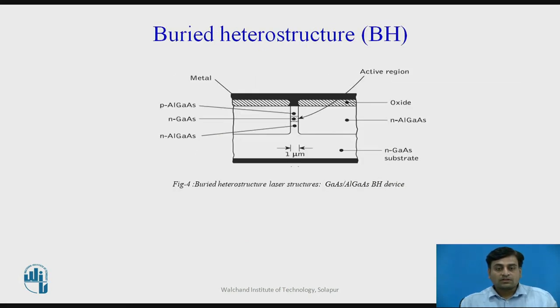The structure of buried heterostructure laser is shown in figure number 4. The optical field is well confined in both transverse and lateral direction within these lasers, providing strong index guiding of the optical mode together with good carrier confinement. Confinement of injected current to the active region is obtained through the reverse biased junctions of higher band gap materials.